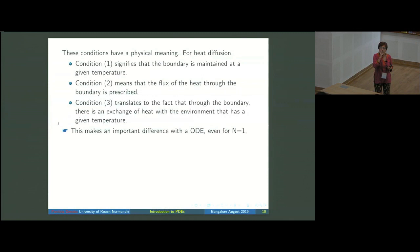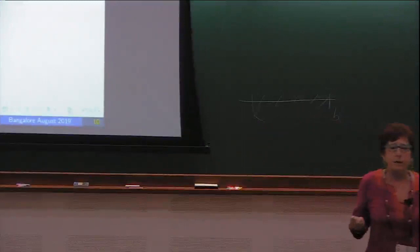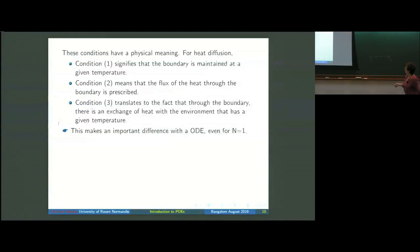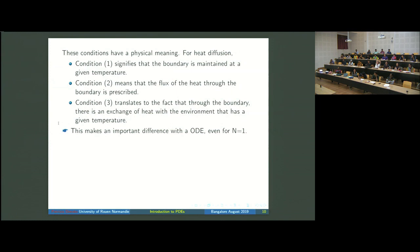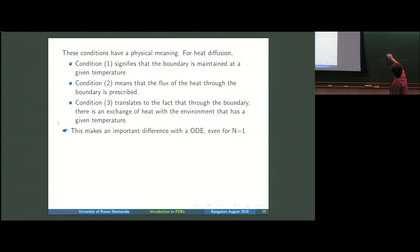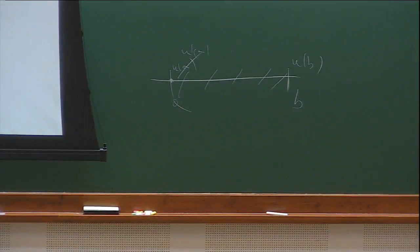The physical meaning: Dirichlet means you fix the temperature on the boundary and keep it fixed. Neumann means you prescribe the flux going out from the body. Robin translates the fact that you can have an exchange on the boundary between flux and temperature. Even for n equal to one, there is a key difference from ODE initial value problems: instead of prescribing two conditions at the same point, you prescribe conditions at both endpoints, like u(a) and u(b) or u'(a) and u'(b), or a mix.